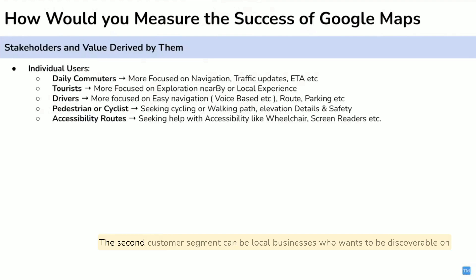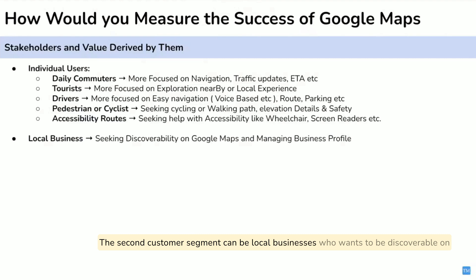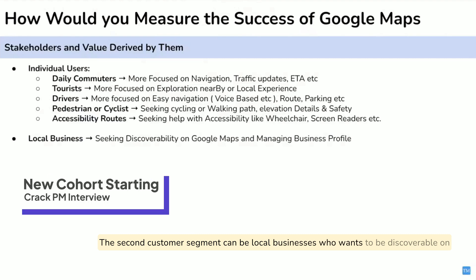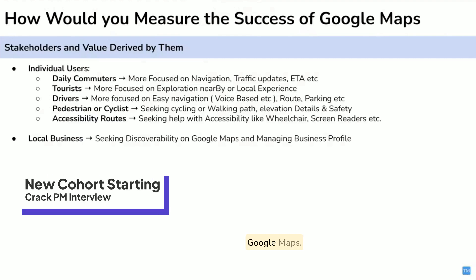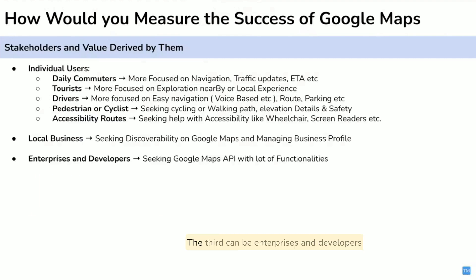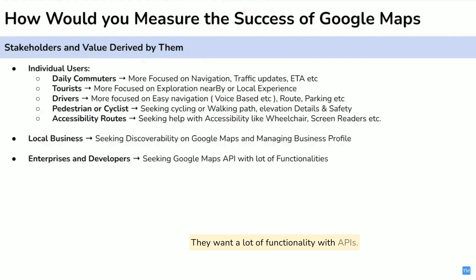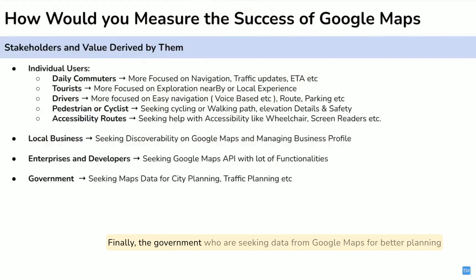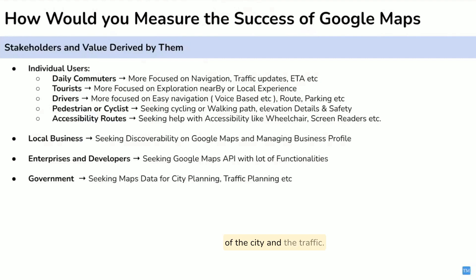The second customer segment is local businesses, who want to be discoverable on Google Maps. The third is enterprises and developers, who want to integrate Google Maps into their systems and need a lot of functionality via APIs. Finally, the government, who seek data from Google Maps for better city and traffic planning.